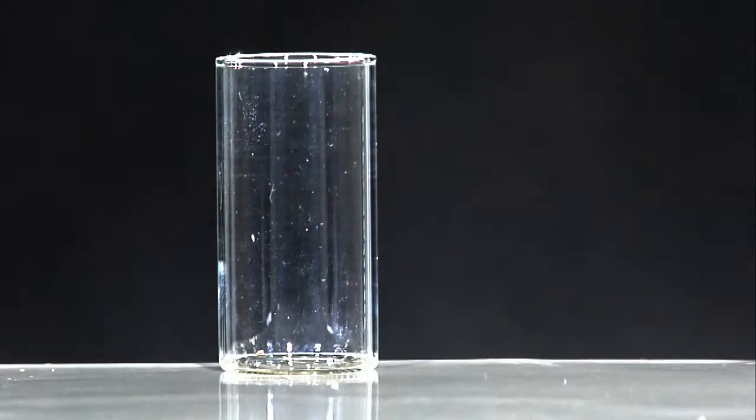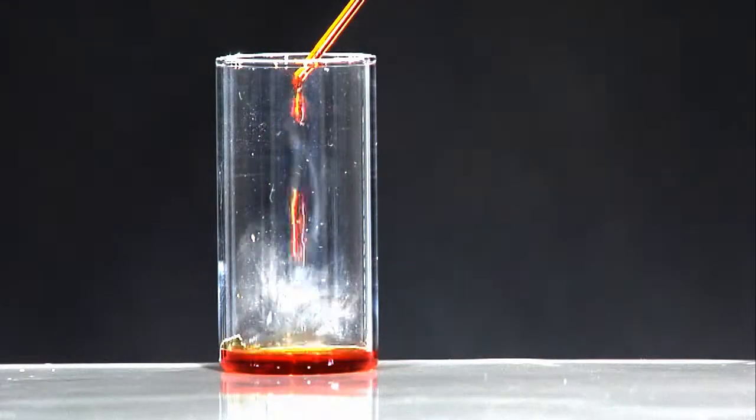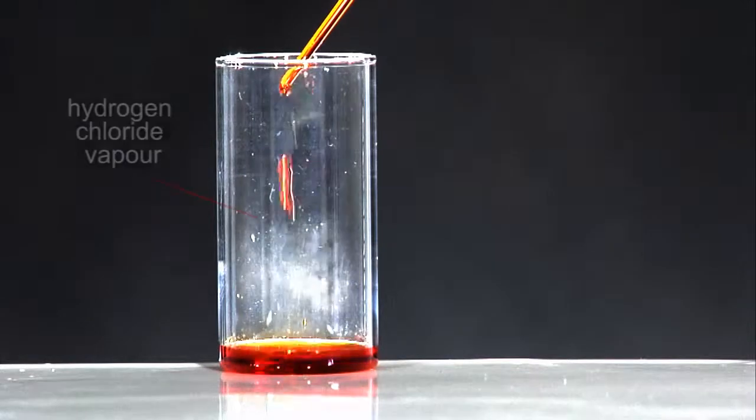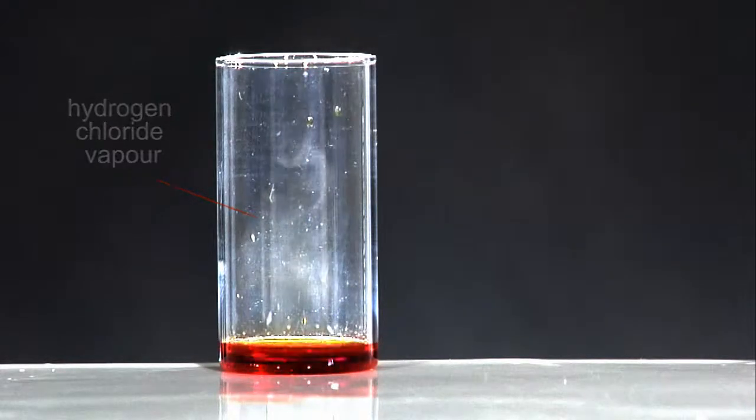Disulfur dichloride is an evil-smelling yellow-orange liquid. It reacts immediately with moisture in the air, forming a number of products.